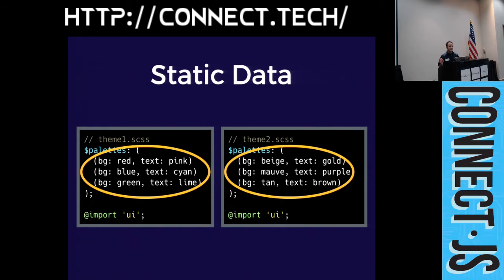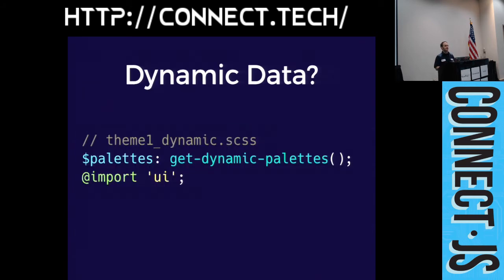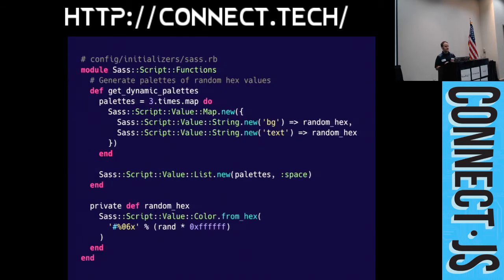We're still dealing with static data, so we want to do this dynamically — something like a get_dynamic_palettes function. This gets into Sass-Ruby interoperability. Similar to building a gem with native C extensions, you write functions in your source language (Ruby) and work with types that exist in the target language (Sass).